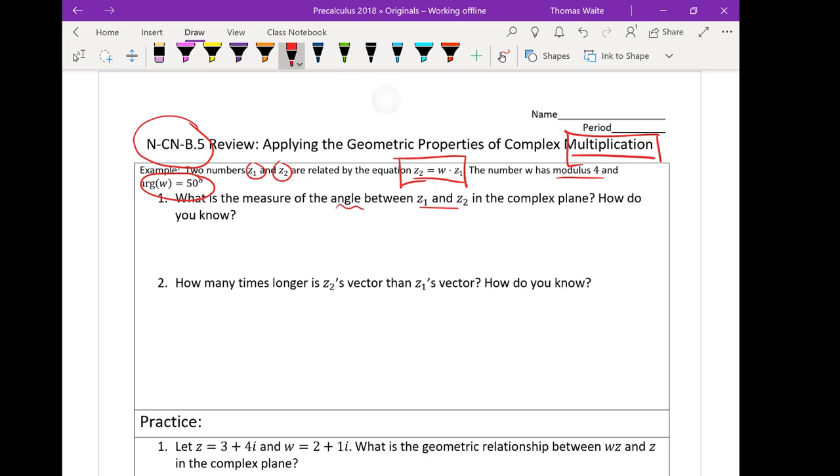Okay, so this question seems kind of intimidating at first. It's asking about angle between numbers but we only have information about W and we know how they're related. Here's a hint for us. It says in the complex plane. So when we're talking about things in the complex plane, we're thinking geometrically. So we should be starting to think about what does this look like and what do I know happens geometrically when we do something like multiply by a number.